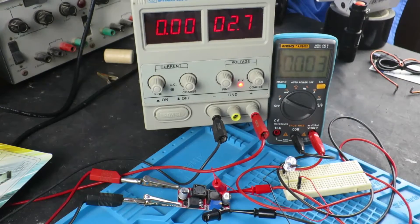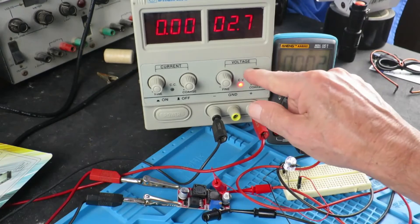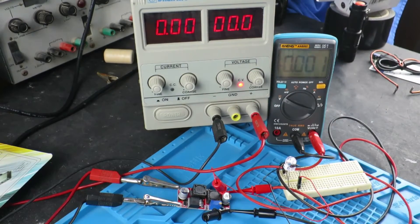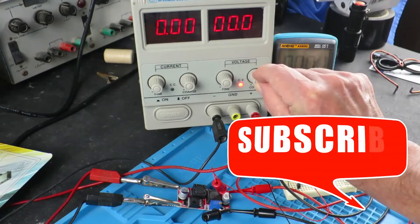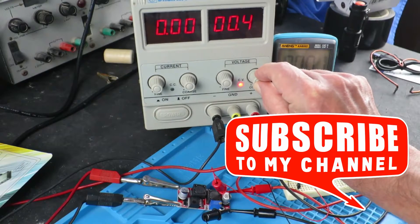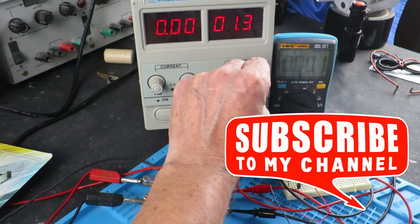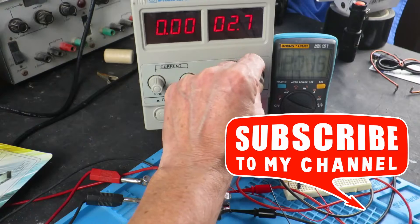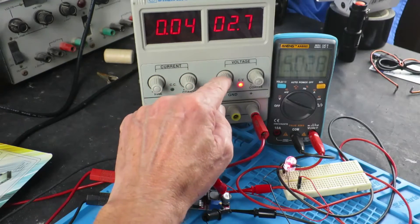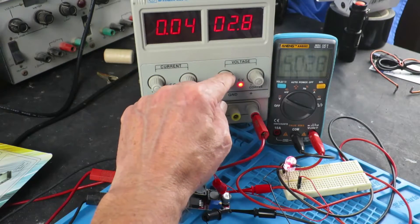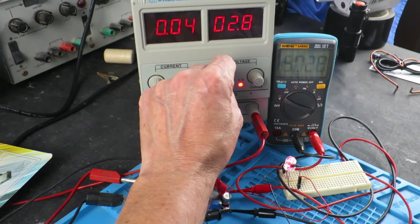So below the 2.7 volts if we go down to zero nothing untoward happens. As we would expect when we come back up nothing happens until we get to the set voltage and then it just comes straight back up on 5 volts.